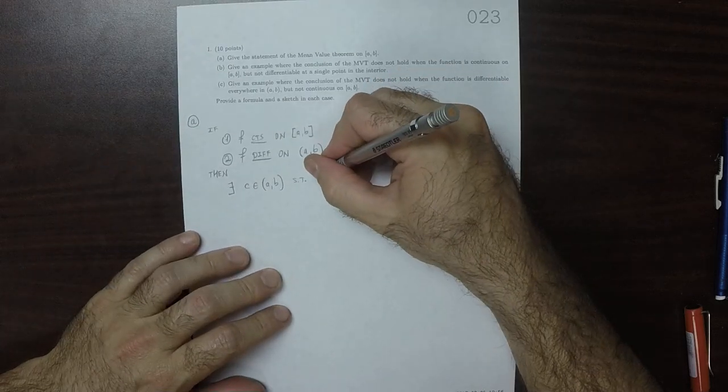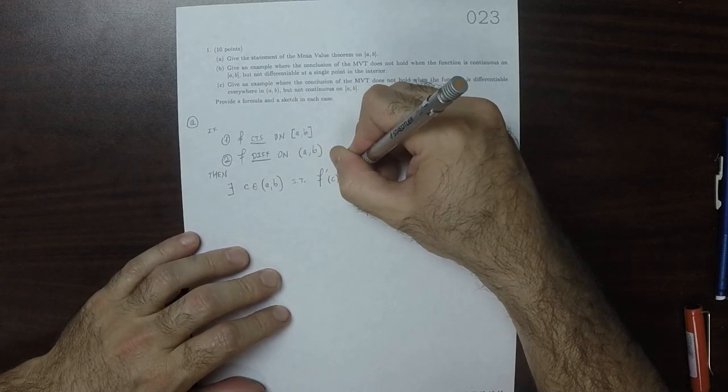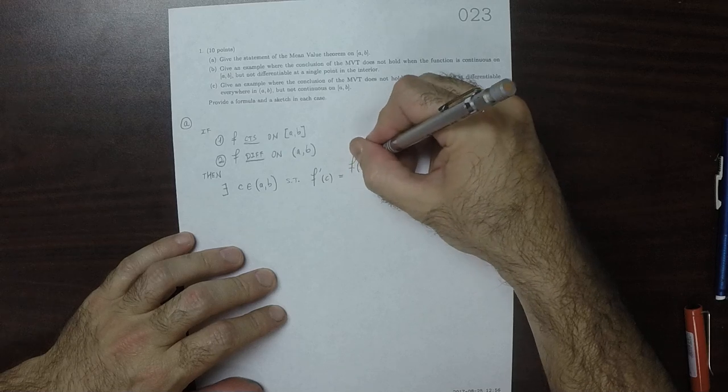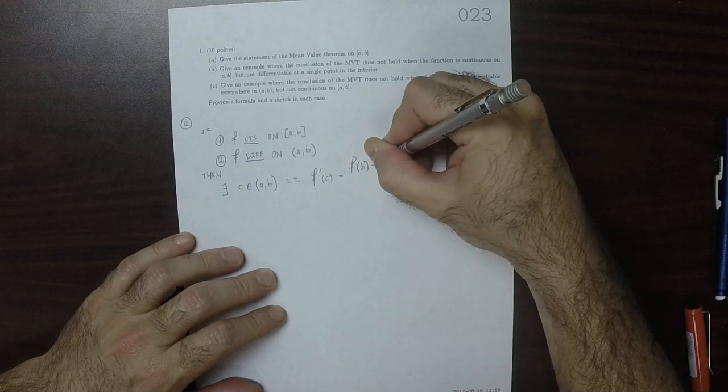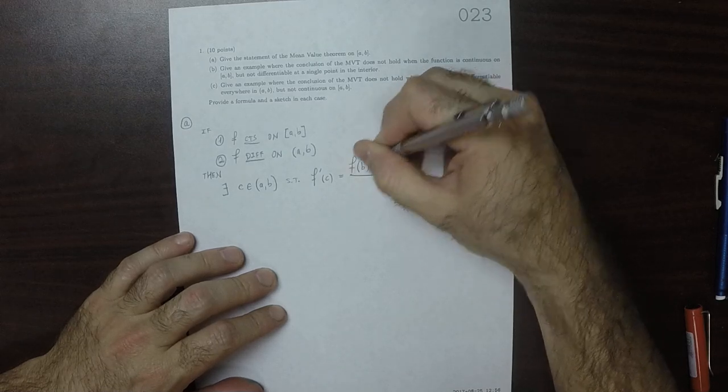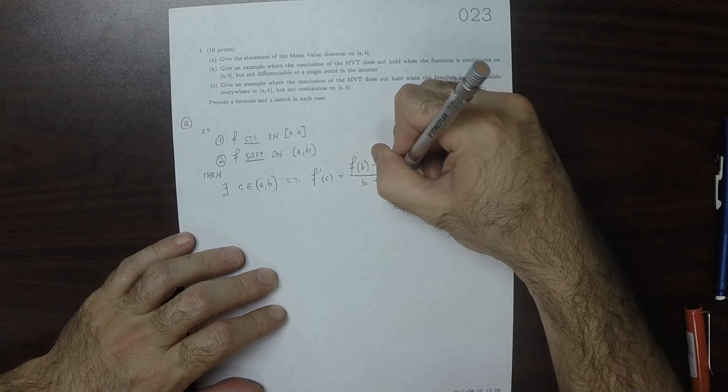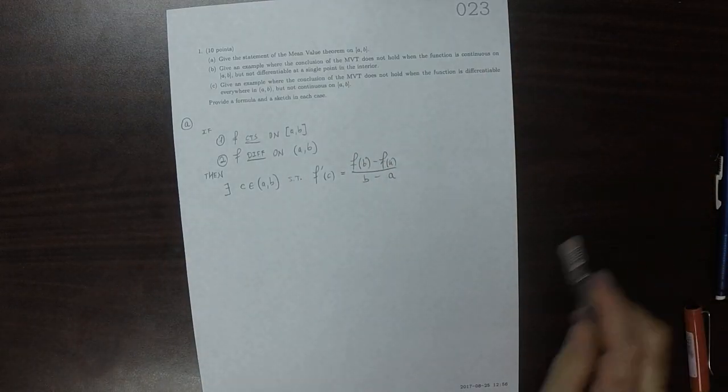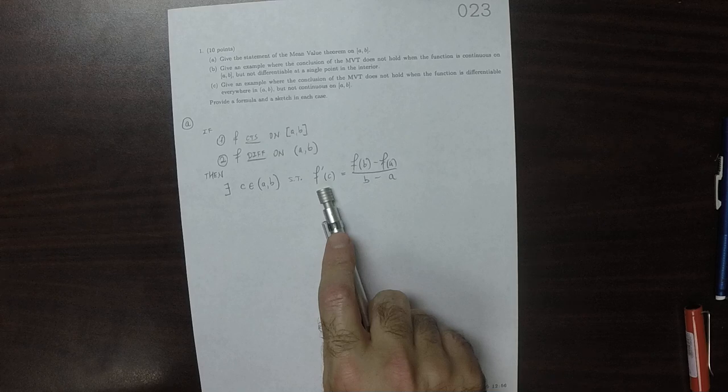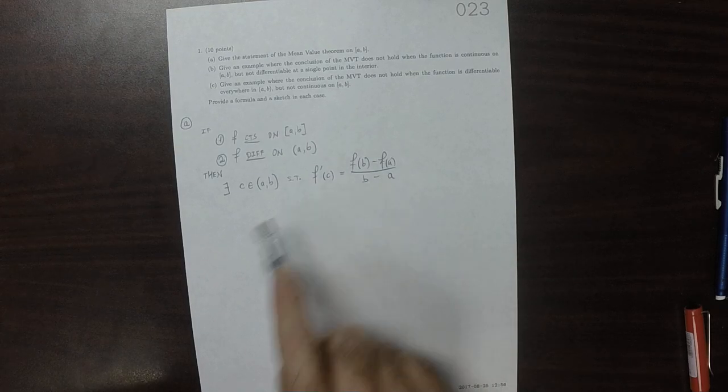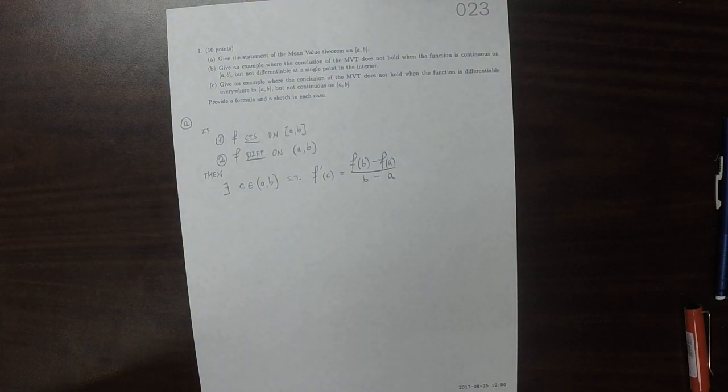such that the derivative evaluated at this c is the average value. Or, if you like, the slope of the tangent line is the same as the slope of the secant line at that point in the interior.